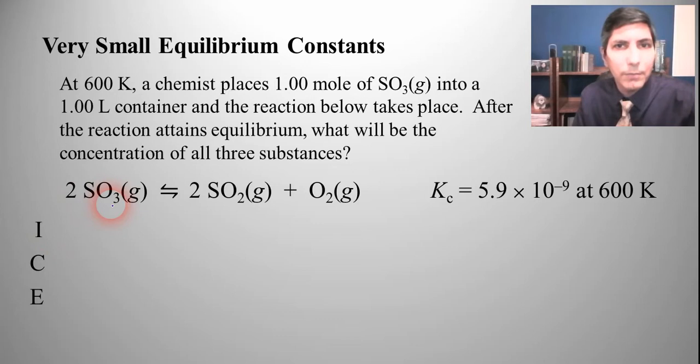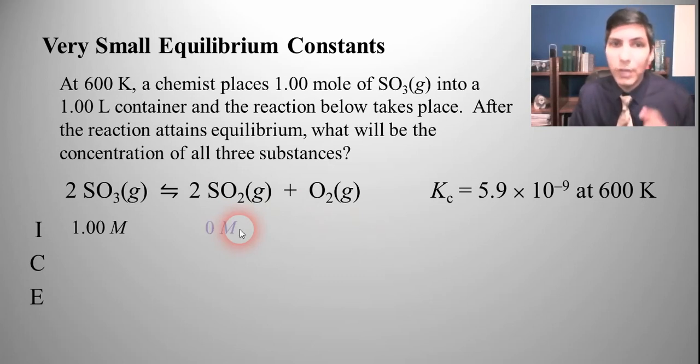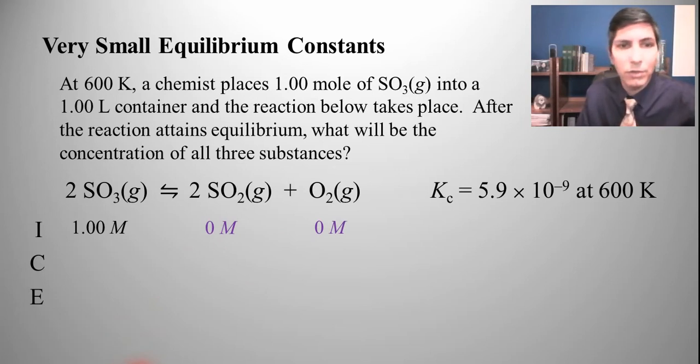Let's plug these numbers in. SO3, we have one mole in a one liter container, so that's one molar SO3 and it doesn't tell us what the other initial concentrations are. So it's safe to assume those are both zero. So we're going to put zero molar for those two. Now it doesn't tell us anything else, so we're going to have to use x for these.